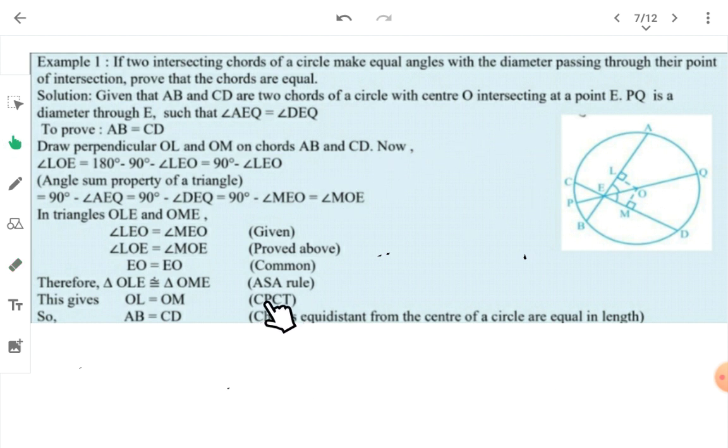To apply AAS rule, we need to take the side between two angles. You know AEQ equal to DEQ was given in the beginning. Substituting, DEQ equals MEQ because it's part of it. And this can be written as MEO. So these two angles are equal, and OE is common. By AAS congruency rule, both triangles are congruent. So OL equal to OM. This means AB equal to CD, because chords equidistant from the center are equal in length.